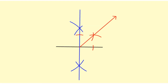There's my bisecting ray. All four angles are 90 degrees because they were formed by perpendicular lines. This angle right here is 45 degrees because it's half of one of the four 90 degree angles.